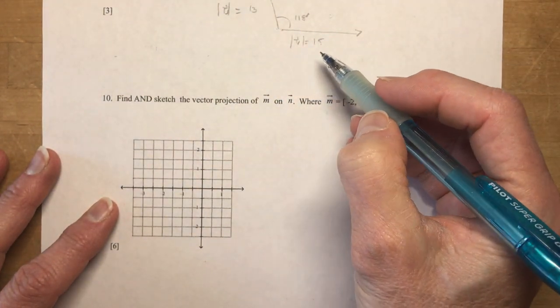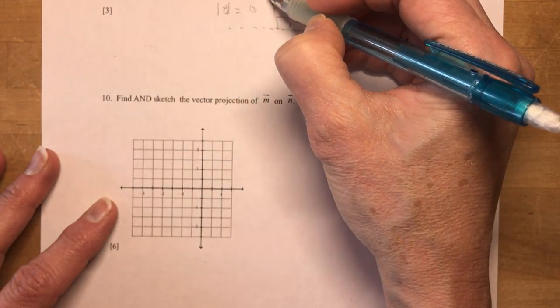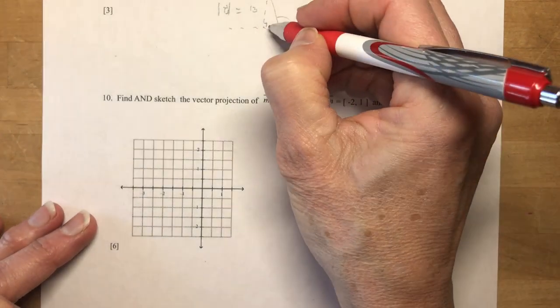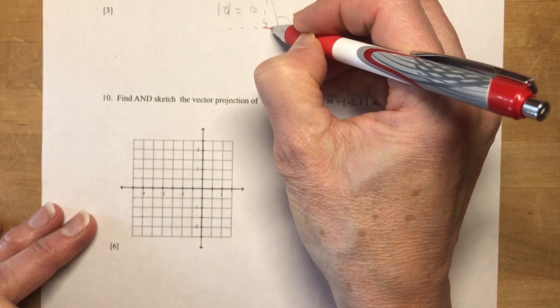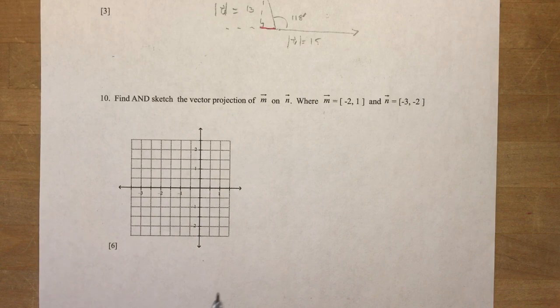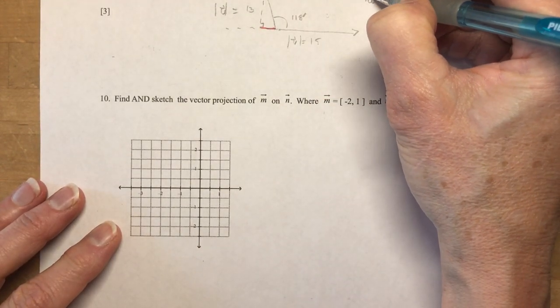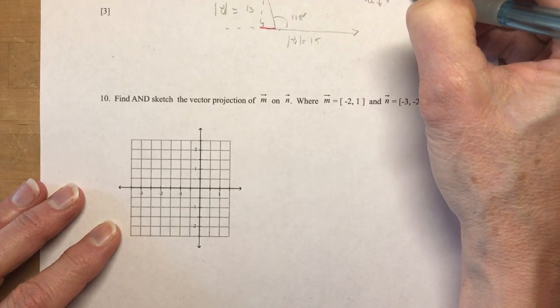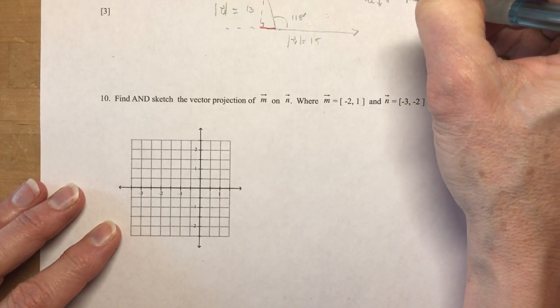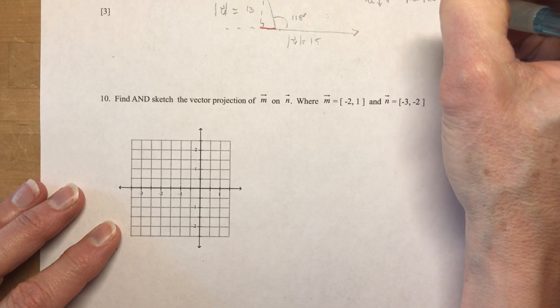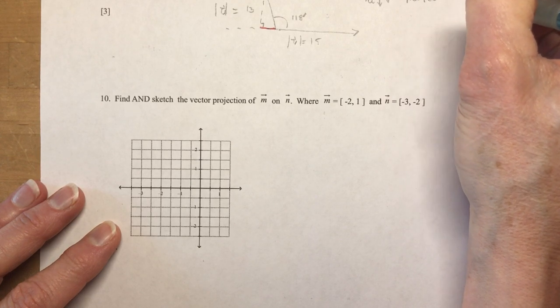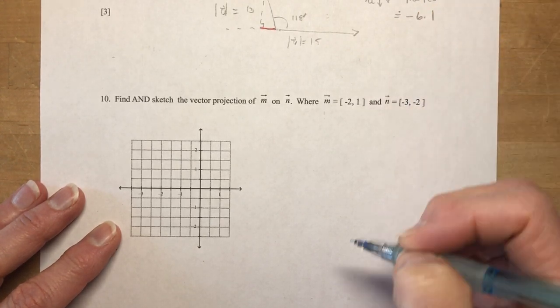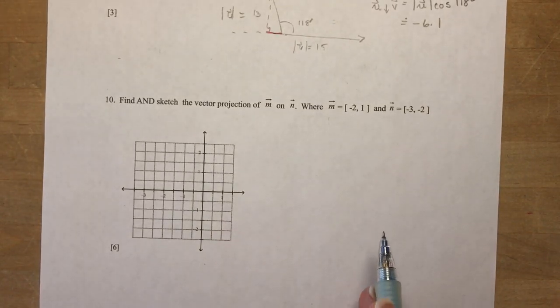And if I want to do U on V, I have to extend this, draw perpendicular, and I'm finding this scalar projection right here. Remember, no arrow on it. So I can do just this little calculation that U on V is equal to the magnitude of U times the cos of 118 degrees, and that comes out to approximately negative 6.1. That makes sense, right? It's going that way.